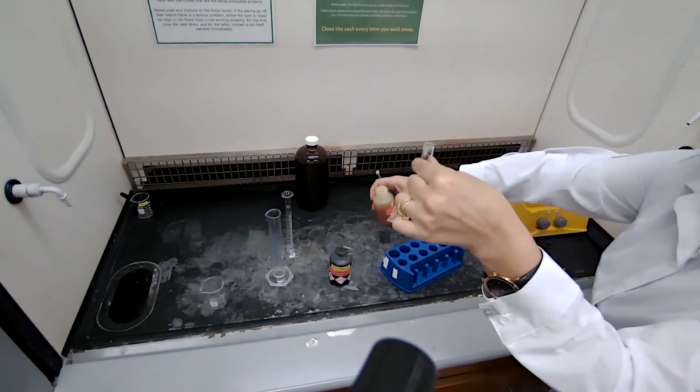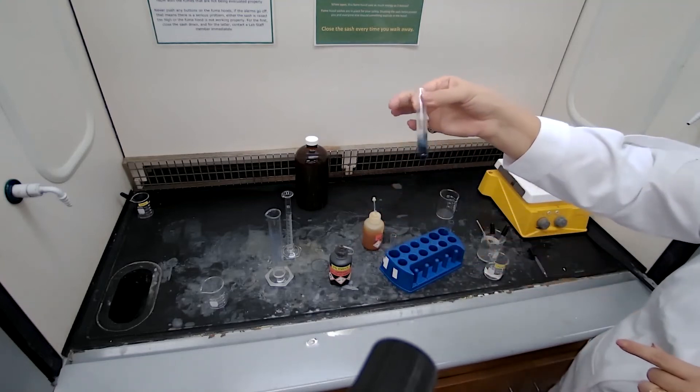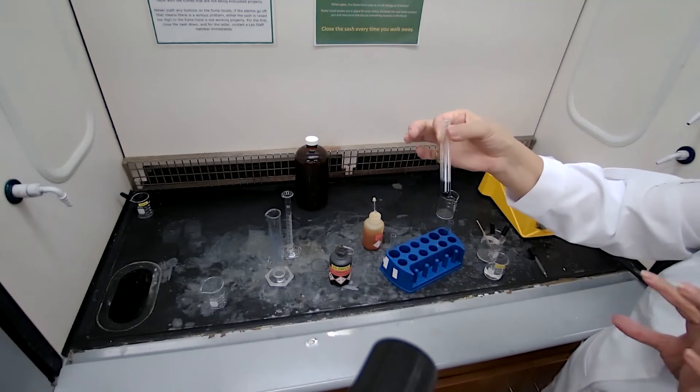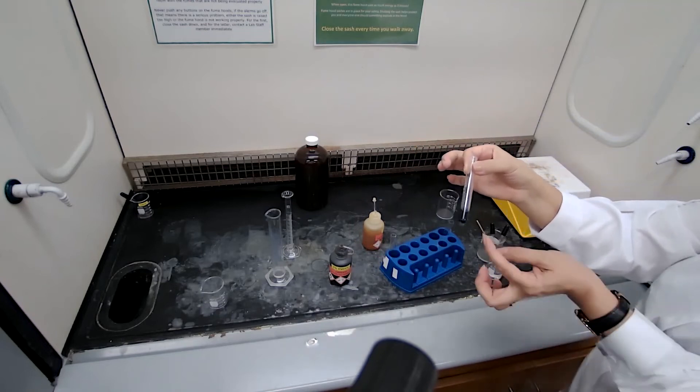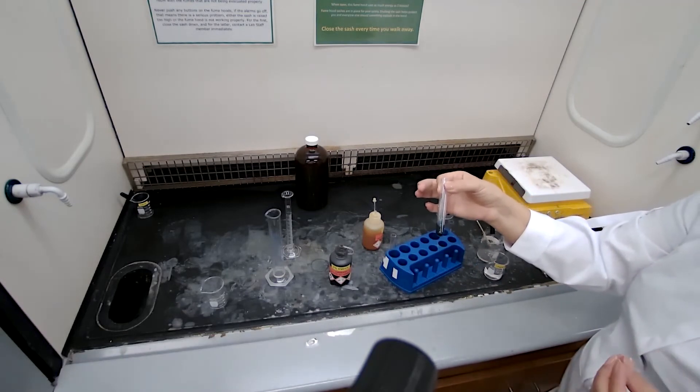Ferric chloride with phenol would give us this deep blue color. So any color change that students see if the concentration is low, if you see like a green color,